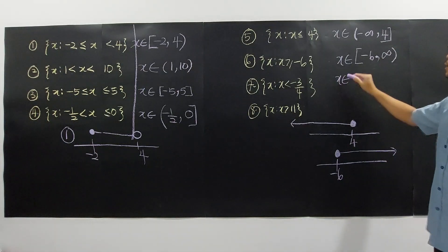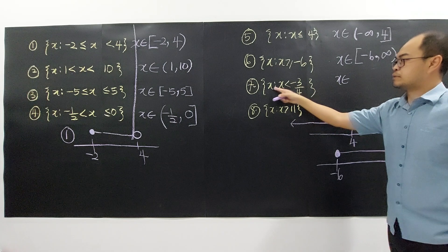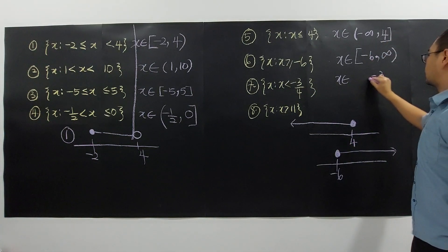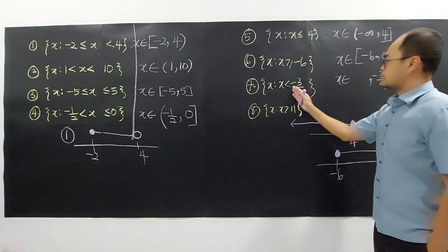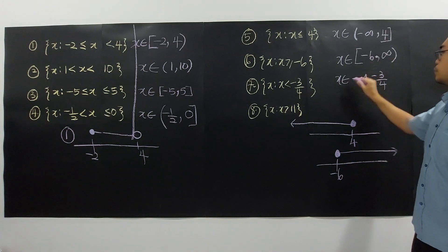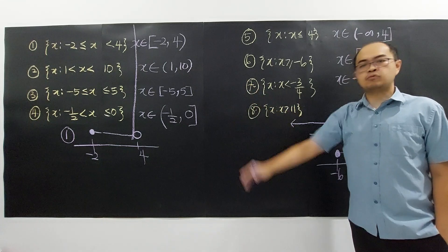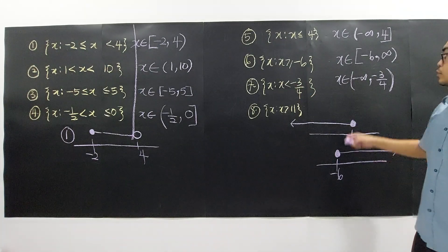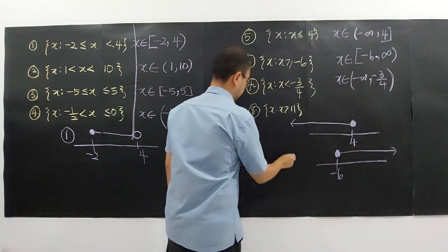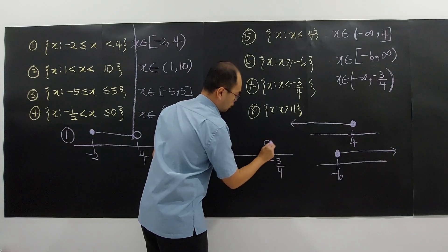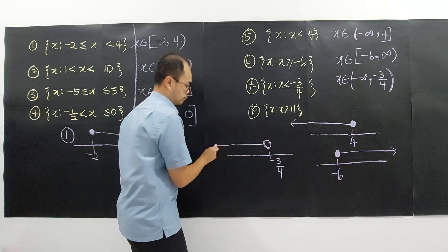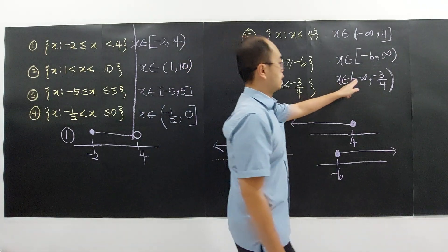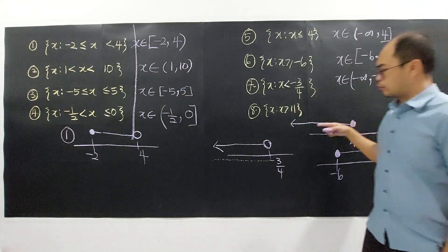For X less than negative 3/4: the number negative 3/4 is not included, so we use an open bracket. All numbers less than negative 3/4 go toward negative infinity. Since it's not included, we write the interval as negative infinity to negative 3/4, both open. On the number line, the arrow points to the left, indicating all values smaller than negative 3/4.